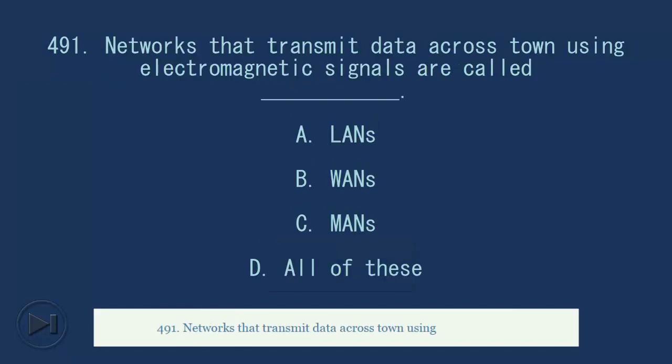491. Networks that transmit data across town using electromagnetic signals are called blank. A. Lands. B. Wands. C. Mans. D. All of these. Answer, C. Mans.